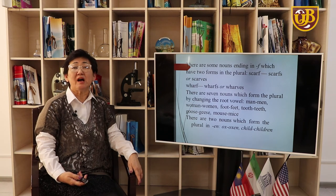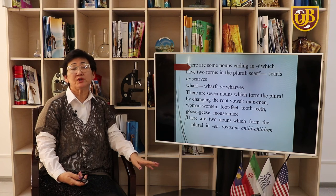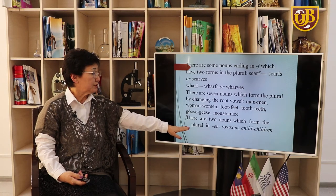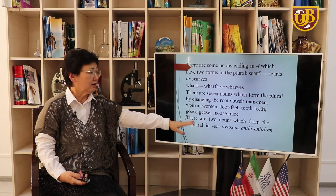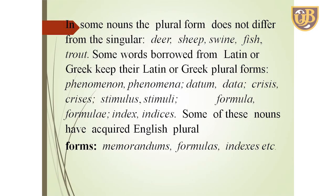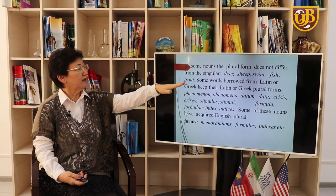There are seven nouns which form the plural by changing the root vowel: man → men, woman → women, foot → feet, tooth → teeth, goose → geese, mouse → mice. These words should be remembered. There are also two nouns with a plural in -en: ox → oxen, child → children. In some nouns the plural form does not differ from the singular: deer, sheep, swine, fish, trout.